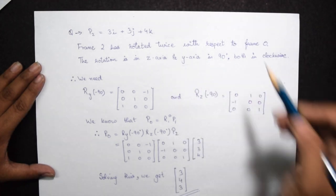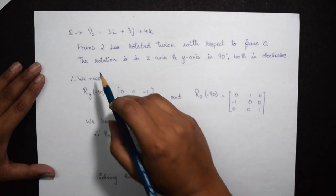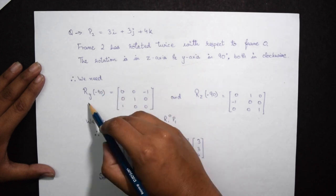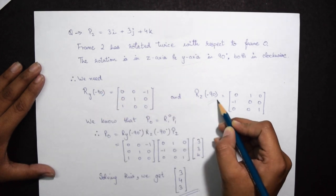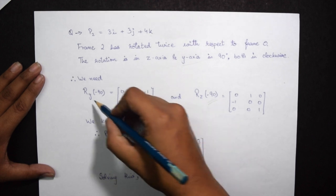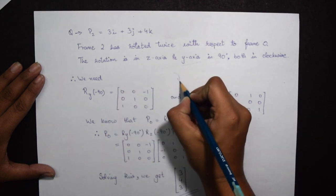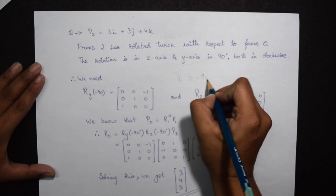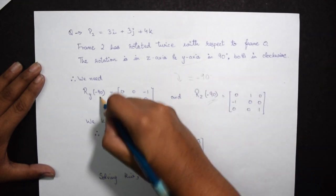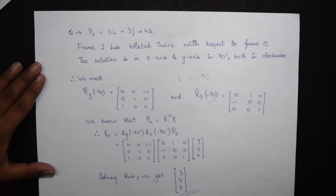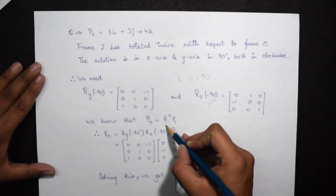I think you had paused and read the question. As said, we have rotated the first frame with respect to the z-axis by 90 degrees and with respect to the y frame by 90 degrees, both in clockwise direction. So we say Rz(-90) and Ry(-90).